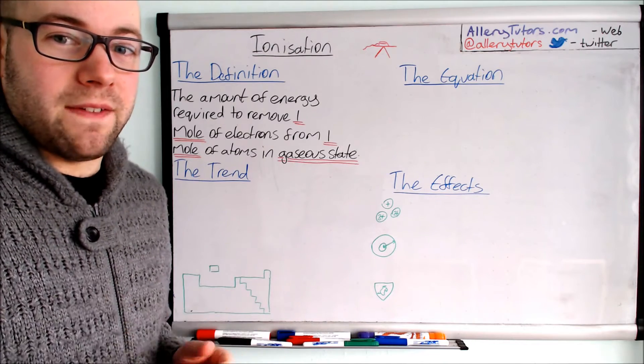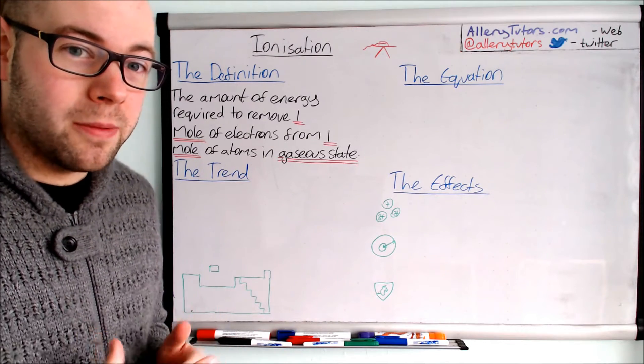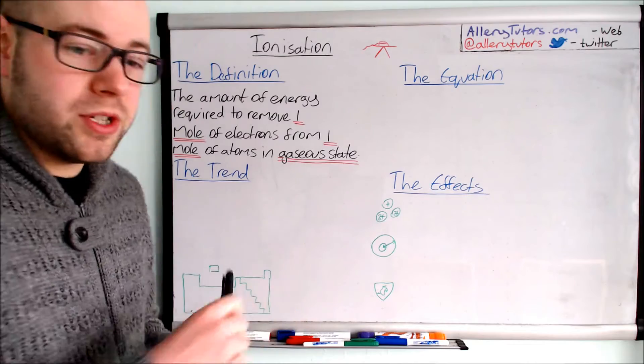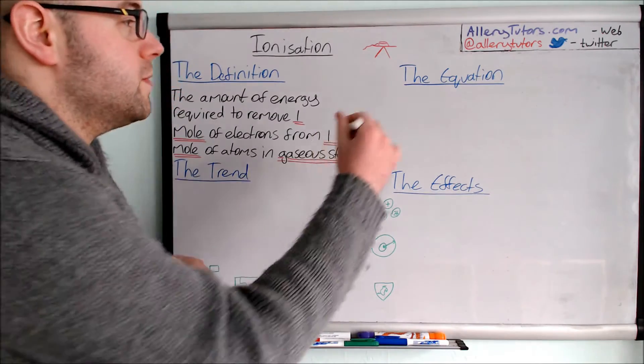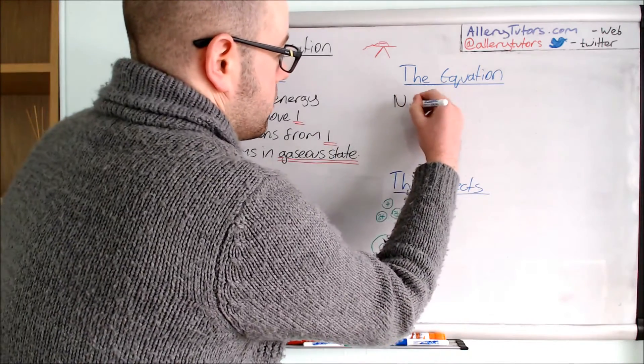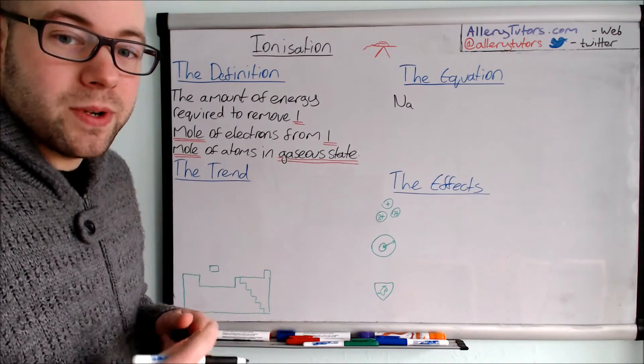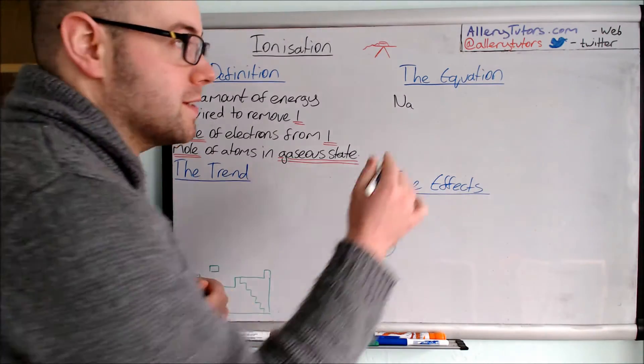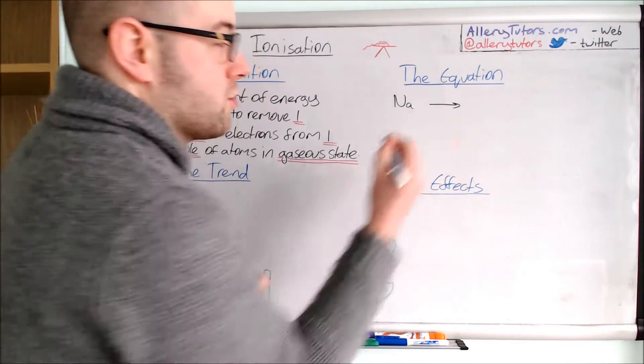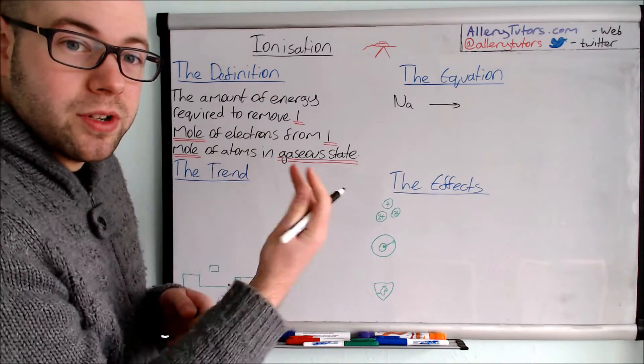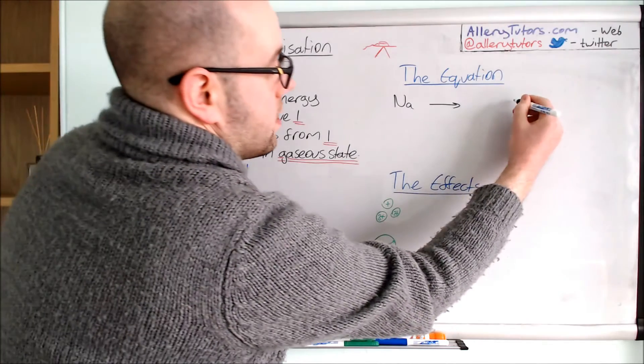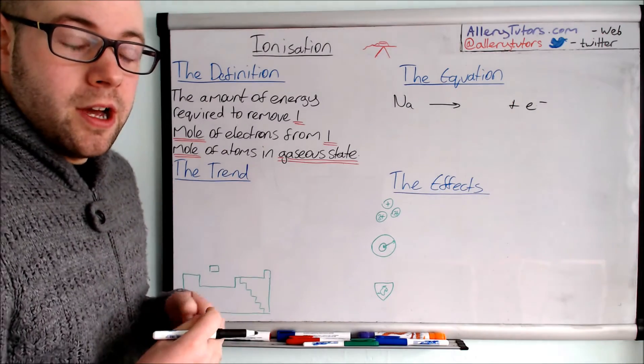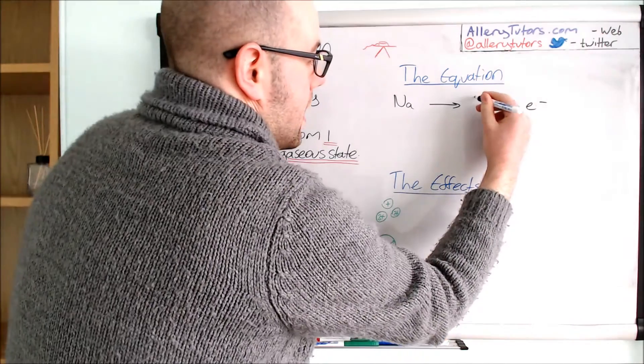Using this definition we can help to form an equation. It's a very common exam question. We're going to write down an equation using sodium. So sodium is Na, and if we ionize it we are trying to remove one mole of electrons. We don't put minus electron there, we actually put the electron on the right hand side because we're removing one electron. When we remove one electron we're left with an ion which is Na+.